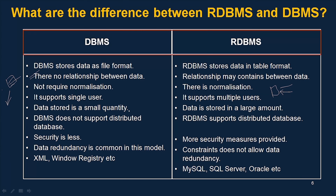In DBMS, data is stored in small quantities because data is kept in files, so it contains less data. On the other hand, in RDBMS data can be stored in large amounts. Also, DBMS does not support distributed databases because all files are stored on one system, whereas RDBMS supports distributed databases.